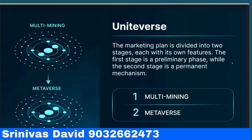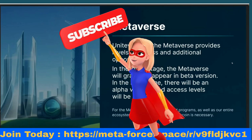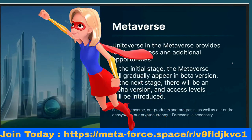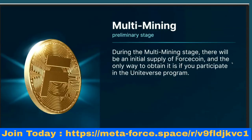The marketing plan is divided into two stages. The first stage is a preliminary phase called multi-mining, and it is the only way to acquire MetaForce coins at the cheapest prices during the launch of UniVerse. The second phase is the actual metaverse launch. UniVerse in the metaverse provides levels of access and additional opportunities — the higher the tiers you have in UniVerse, the more you can earn from the metaverse and the more access you have inside of it.